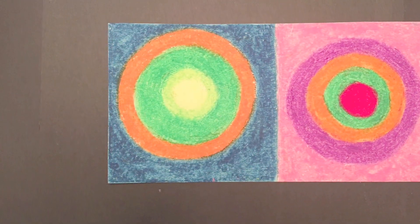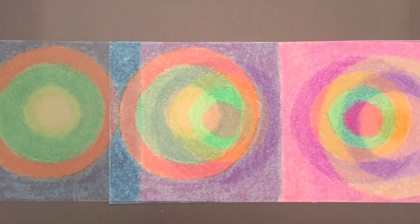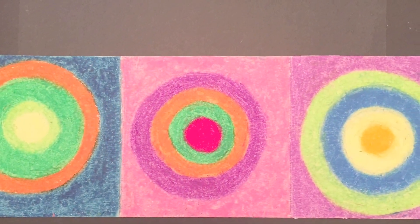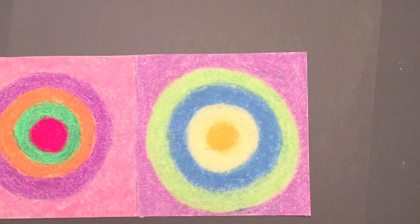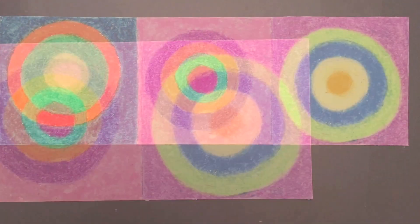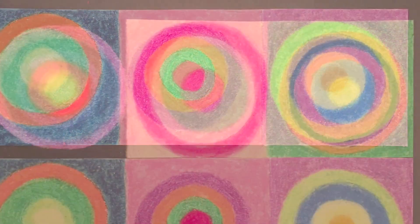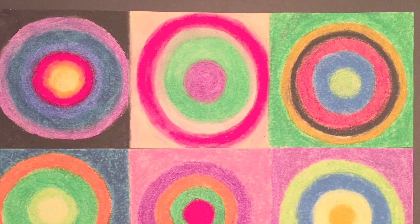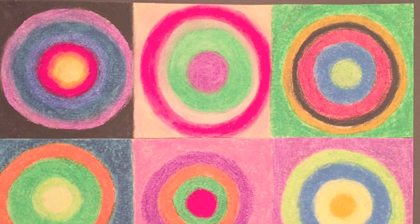Now all that's left to do is color in your next two squares the same way that you did the first one. Choose any colors you like. That's all there is to it. Now it's your turn to make your very own Kandinsky circles.